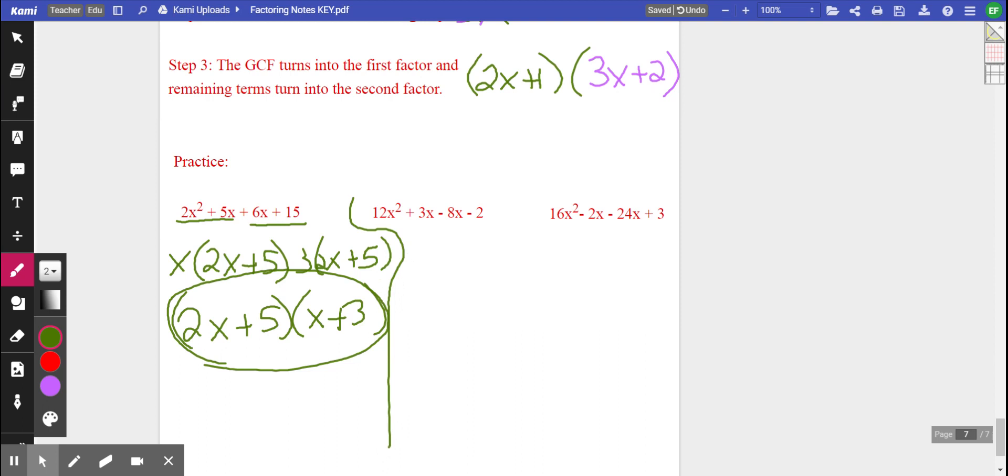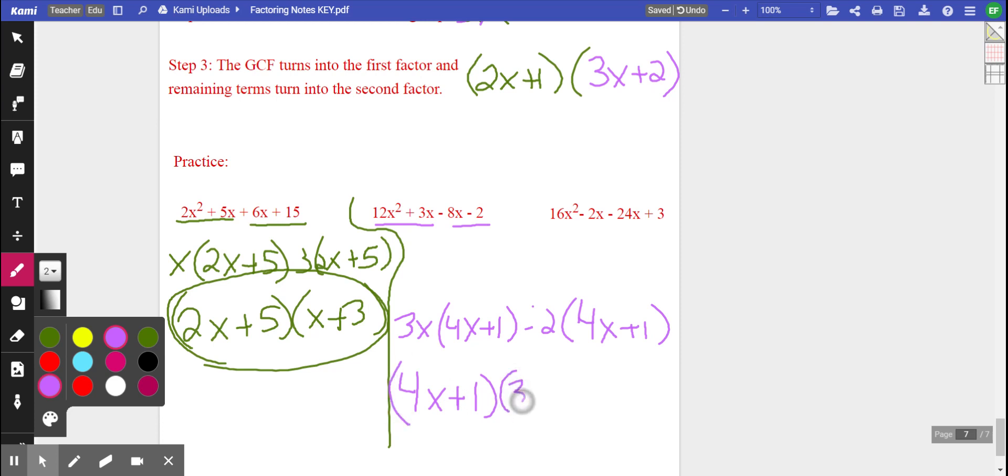Let's move on to the next one. So let's take grouping the first two, grouping the last two. I'll move it down a little bit. GCF of the first set looks like 3x. We'll be left with 4x plus 1. GCF of the second set looks like that's going to be a negative, negative 2. So in that case, we're going to be left with again 4x plus 1. So in that case there, final answer, 4x plus 1 is one factor and 3x minus 2 would be another factor.